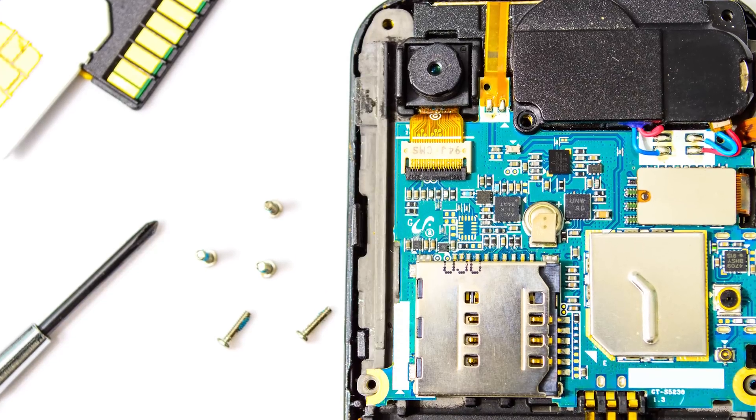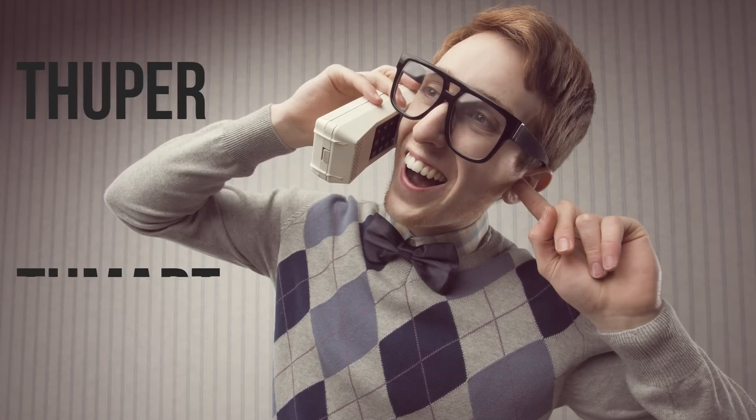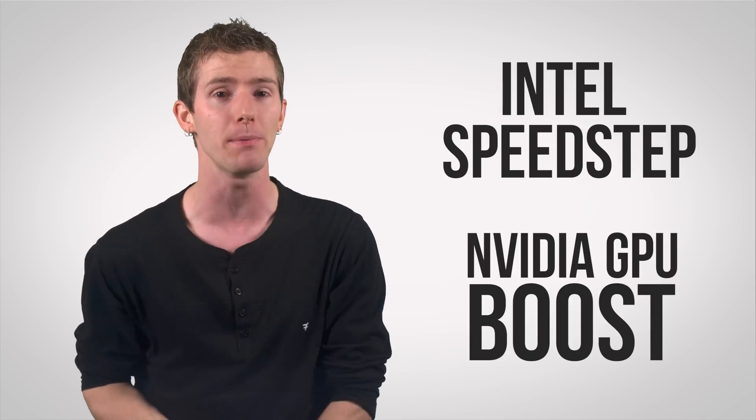Well, today's microprocessors, not just the ones in your computer but the ones in your phone or other devices as well, are super smart. They are monitoring their temperature and power use hundreds of times per second and adjusting their performance, so the frequency that they run at, on the fly with features like Intel Speedstep and Nvidia GPU Boost.